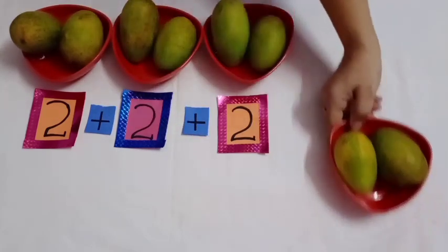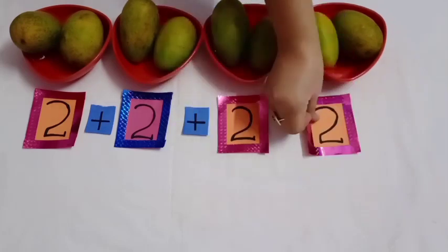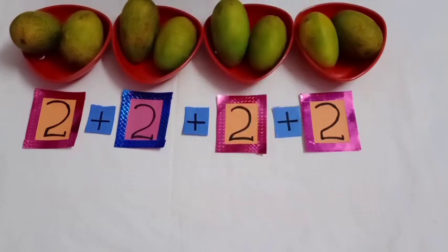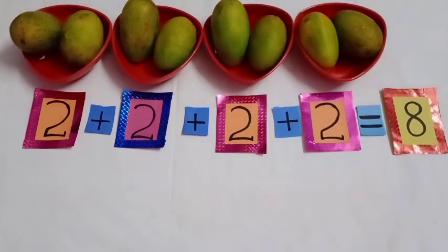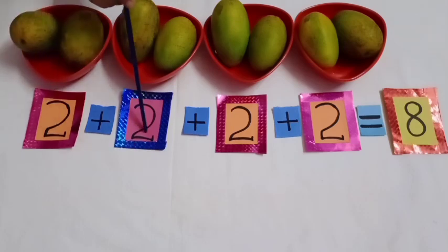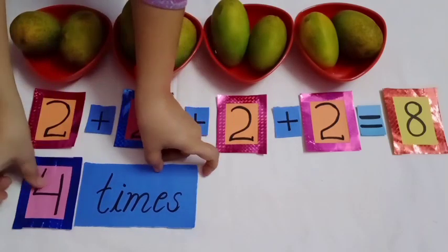In the fourth bowl, a student came with two mangoes. Now there are eight mangoes in these four bowls. See, two is here for how many times? One, two, three, four. So we can say four times two.